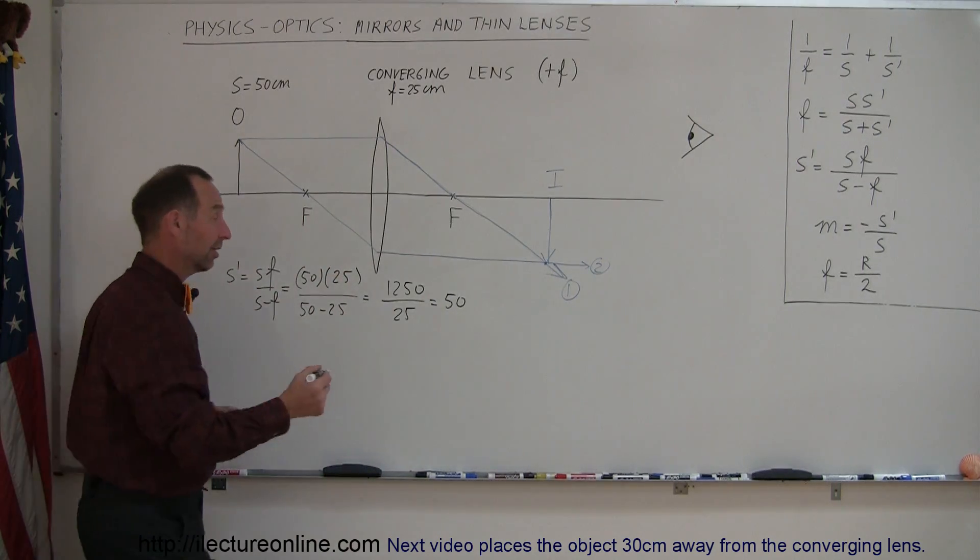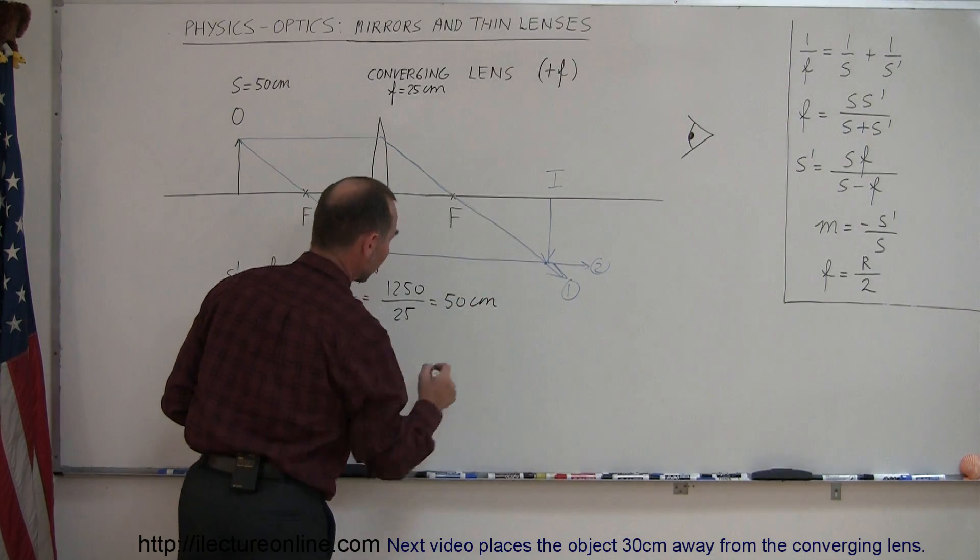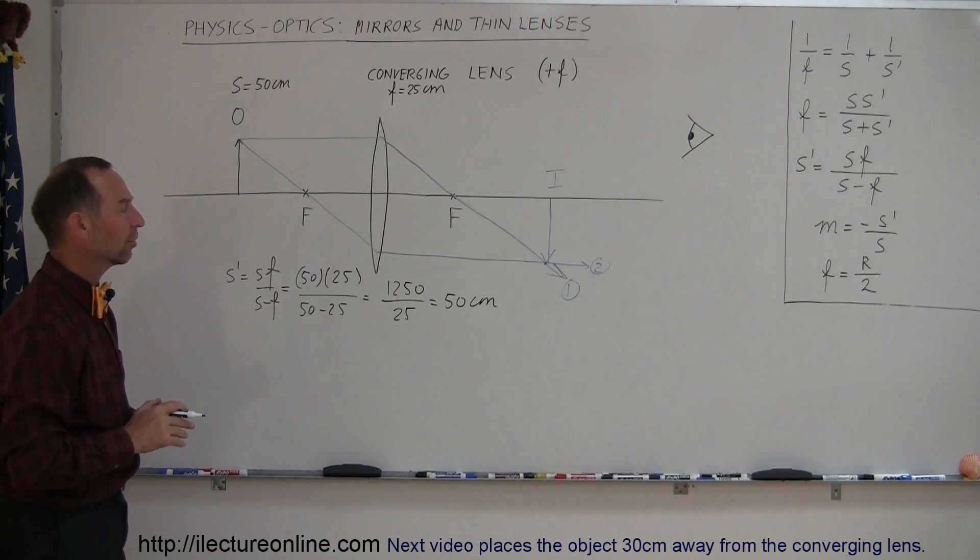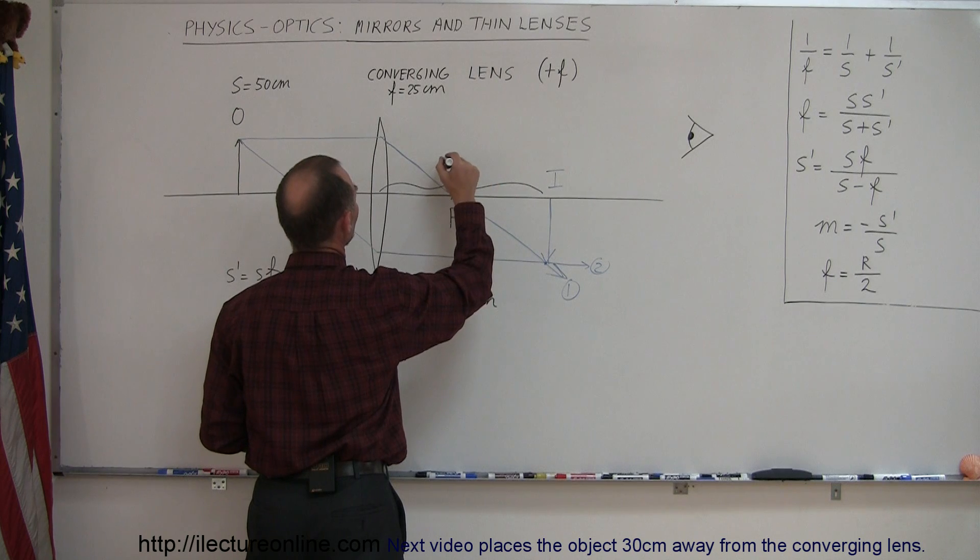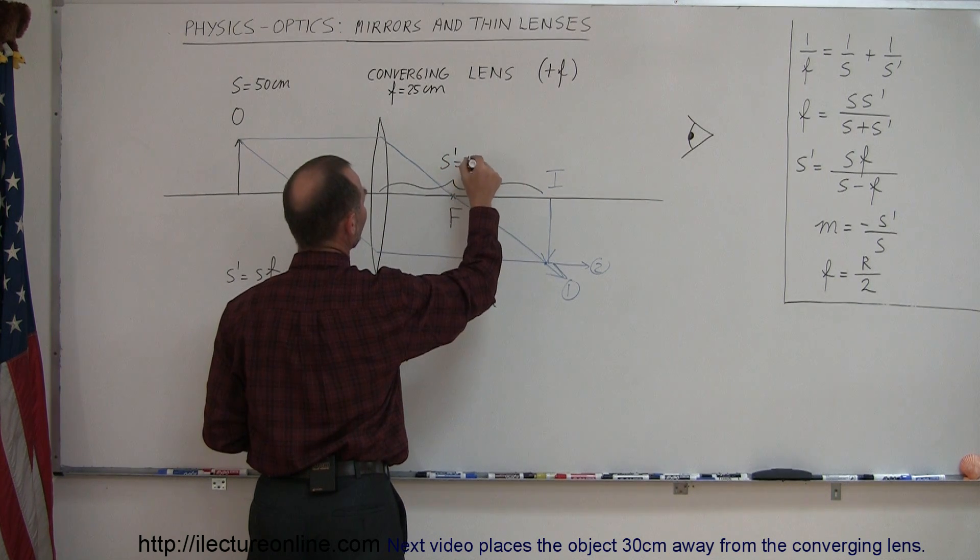All right, now, let's say it's centimeters, because all the units were in centimeters. It's a positive 50 centimeters. So, first of all, we know that the distance from the lens to the image, S prime, is equal to 50 centimeters.